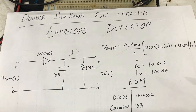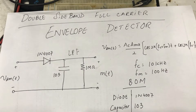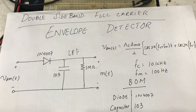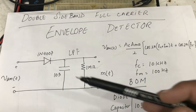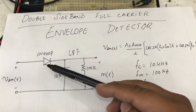I'm going to generate my AM modulated signal using my function generator. It will generate a modulated signal; I can change the modulation depth and everything using this. Then I'm going to apply that signal to my circuit.